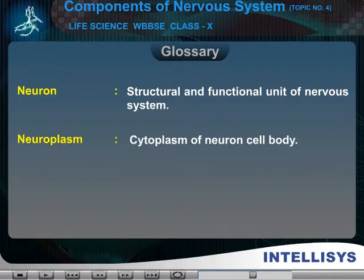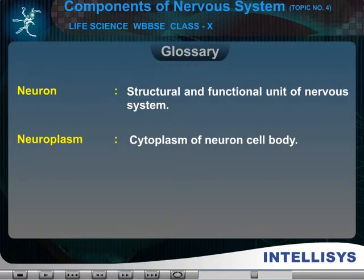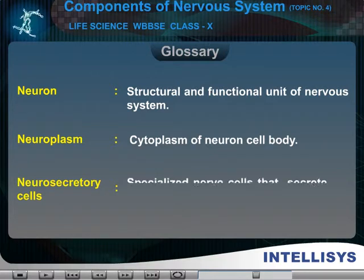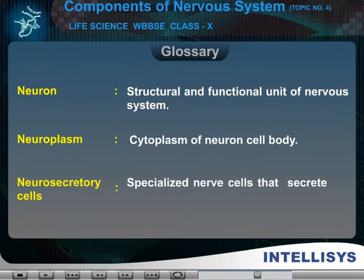Neuroplasm — cytoplasm of neuron cell body. Neurosecretory cells — specialized hub cells that secrete neurohormones.